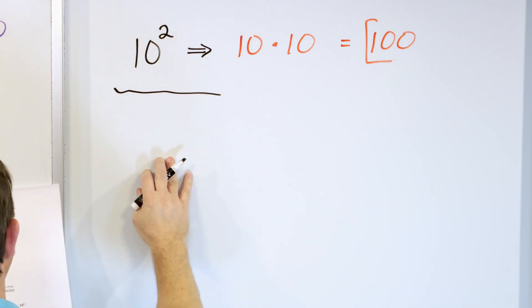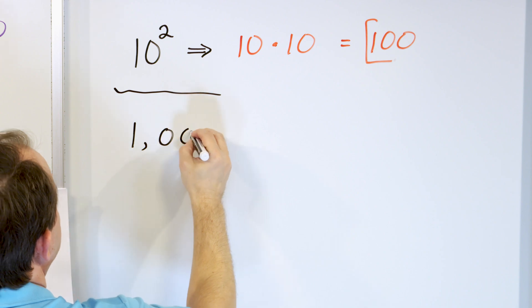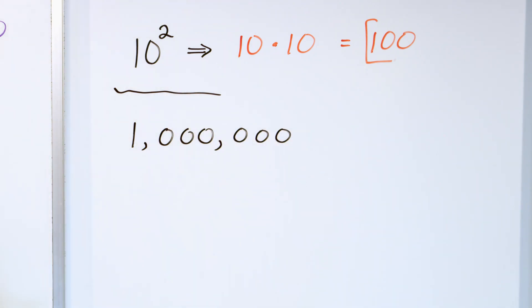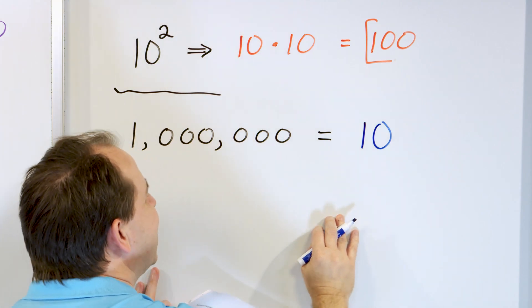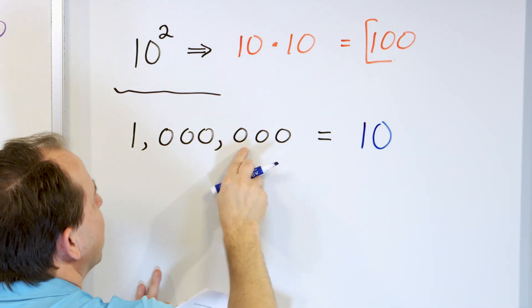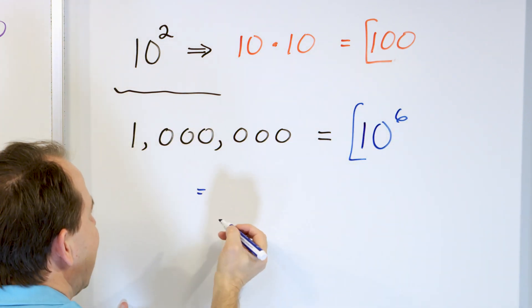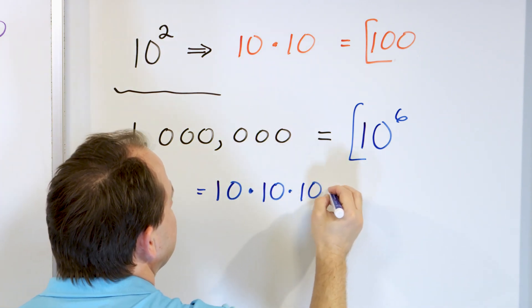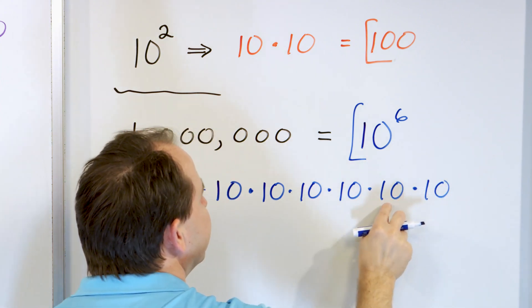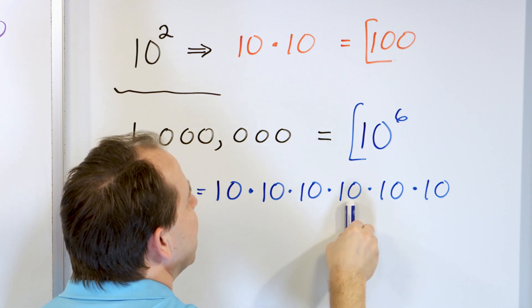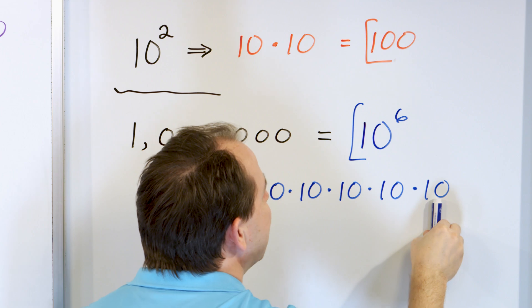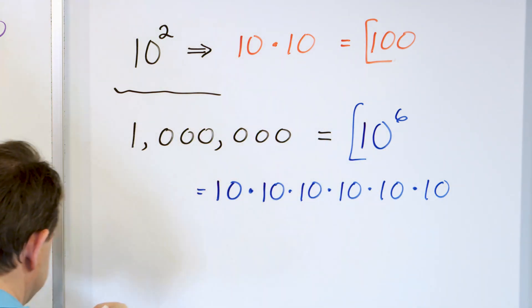Problem five: convert 1 million to a power of 10. How do we write 1,000,000 as a power of 10? We count the zeros: 1, 2, 3, 4, 5, 6 — so it's 10 to the power of 6. We can verify: 10×10=100, ×10=1,000, ×10=10,000, ×10=100,000, ×10=1,000,000. So 1 million equals 10^6, and you can just count the zeros and write the exponent.